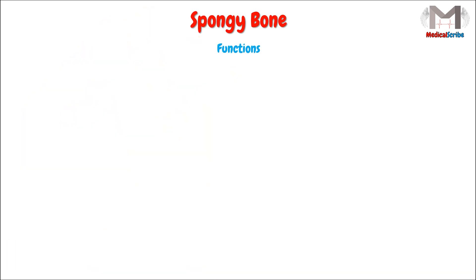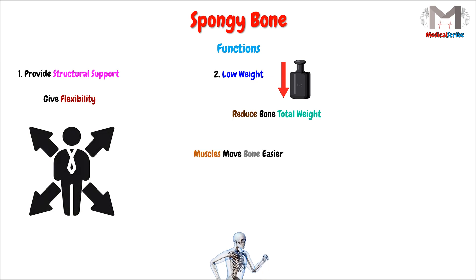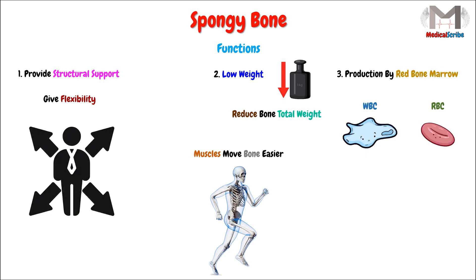In today's video, we will know the functions of this type. Firstly, it will provide structural support and give flexibility to the bone. Secondly, the weight of the spongy bone is relatively less than that of the compact bone, which will reduce the total weight of the bone so the muscles can move the bone easier. And lastly, the red bone marrow inside its cavities will be the factory that produces blood cells, such as white blood cells, red blood cells, and platelets.